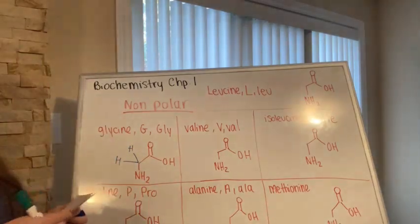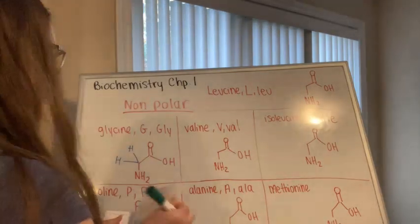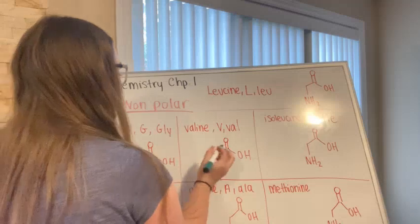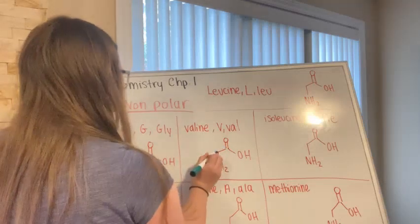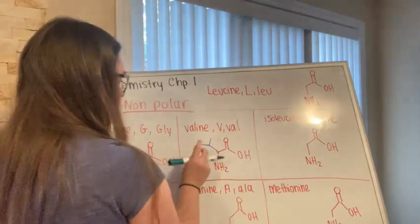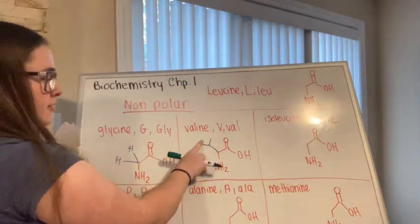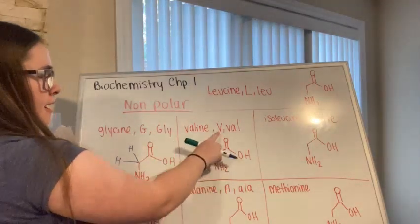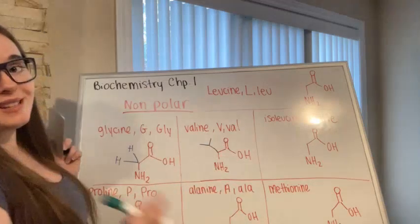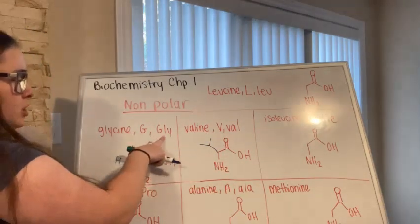Our next amino acid is valine. Valine is a little easier to remember because the side chain kind of looks like a V. Valine's one-letter abbreviation is V and its three-letter abbreviation is V-A-L.